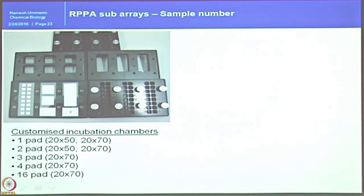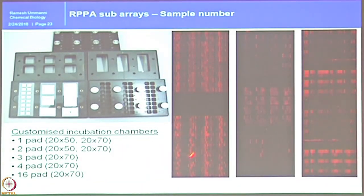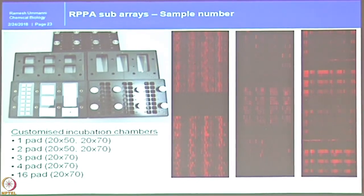These chambers are custom made — now available in the market. One pad uses one antibody for the entire slide for 2,000 samples. If you have only 1,000 samples, you can divide them into two groups of 1,000 each and use two antibodies per slide. If you have very few samples, you can divide the slide into 16 different chambers and apply 16 antibodies in one glass slide for a couple of hundred samples. You can see examples here: two pads, three pads, four pads — same samples with two, three, or four different antibodies respectively. This is how you miniaturize your array.